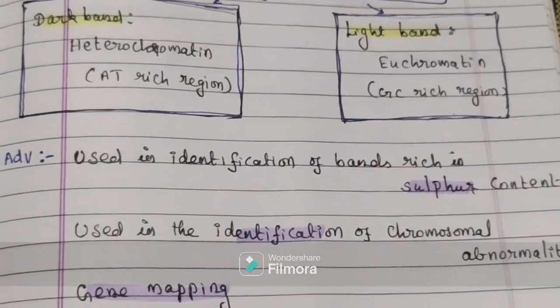C-banding technique involves treating chromosomes with an alkali solution to denature DNA, then washing with sodium citrate at 60°C for 30 minutes. Repetitive DNA re-natures but unique DNA does not re-nature. The slide is then stained with Giemsa, revealing the heterochromatin region banding pattern. Advantages include identification of chromosomes particularly in insects and plants, identification of bivalents, paternity testing, and gene mapping.